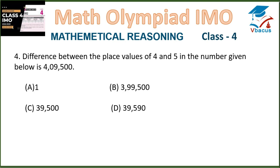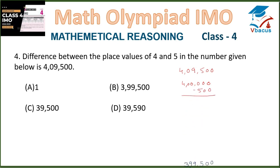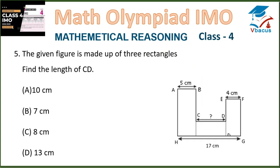Question 4: Find the difference between the place value of 4 and 5 in the number 4,9,500. The place value of 4 is 4,00,000 and the place value of 5 is 500. So the difference is 4,00,000 minus 500, which equals 3,99,500. That is in option B, so option B is the correct answer.